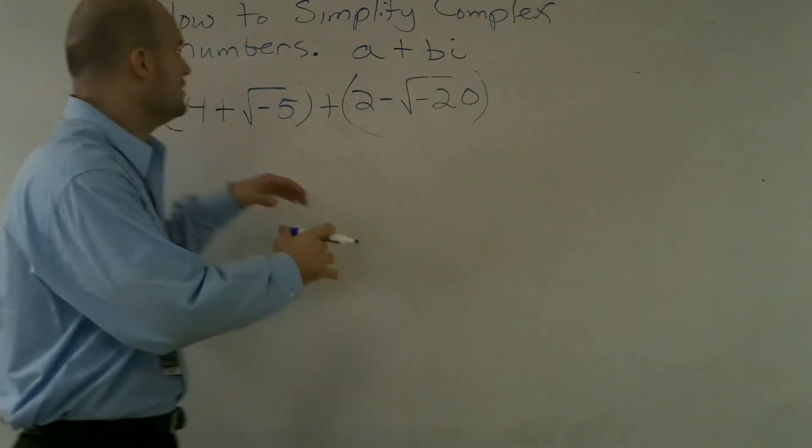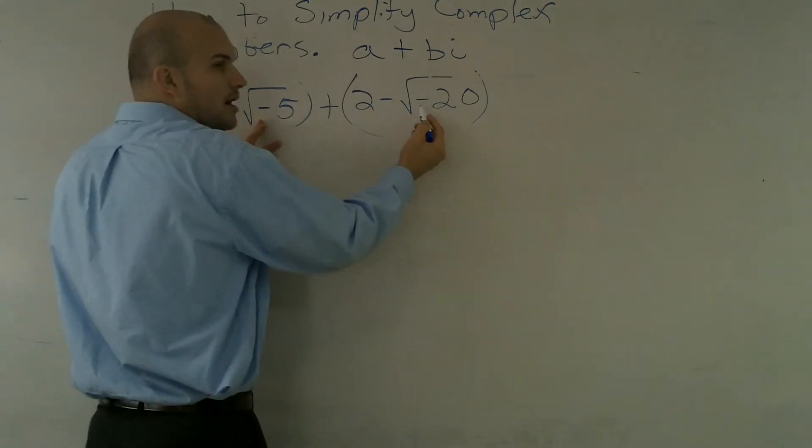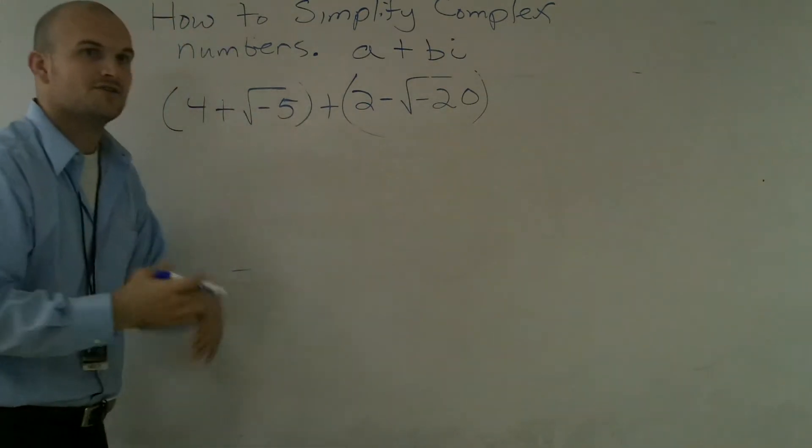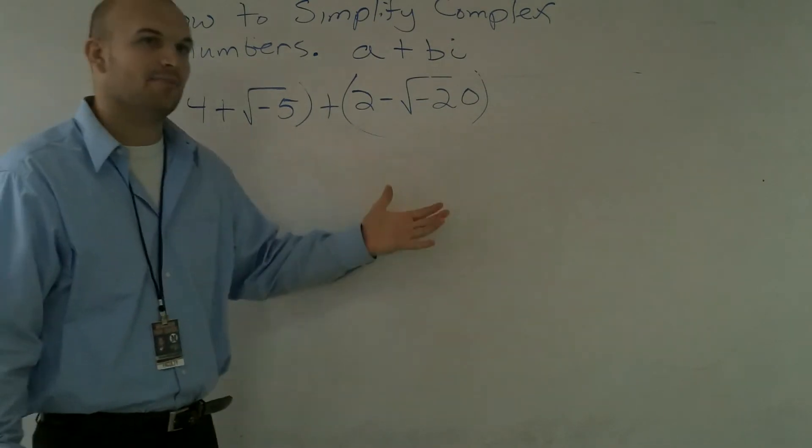One thing I notice is I have two negative numbers under a radical, so I know I can transfer these to complex numbers.